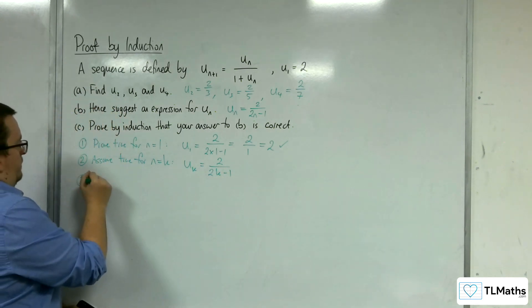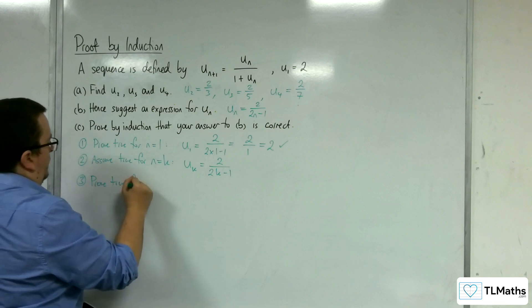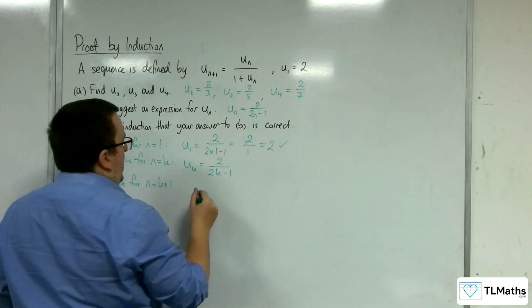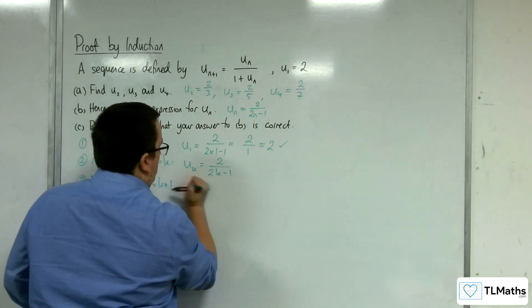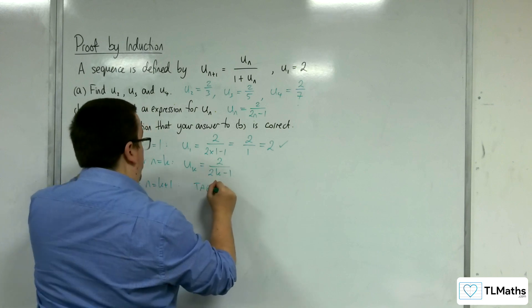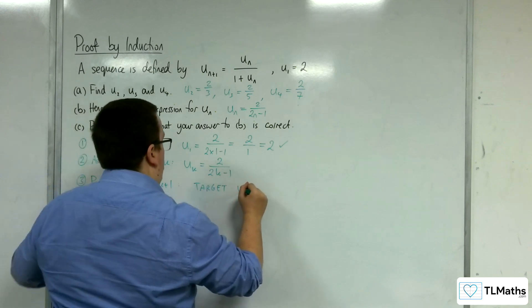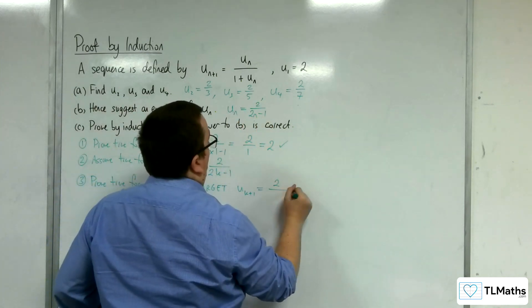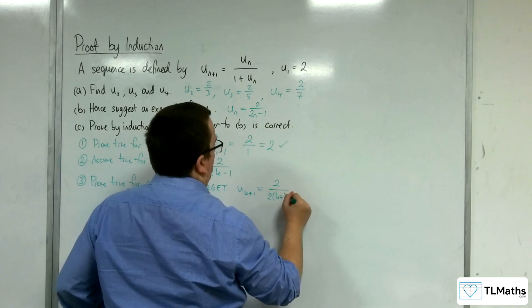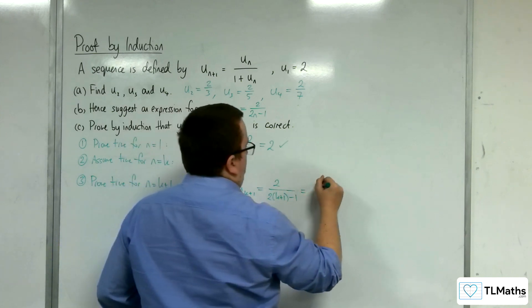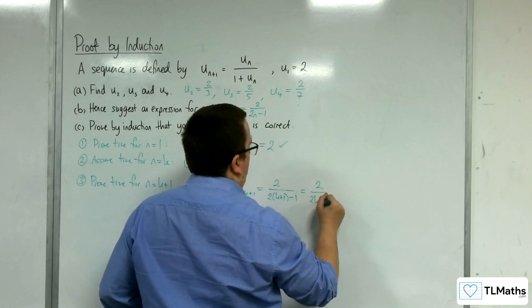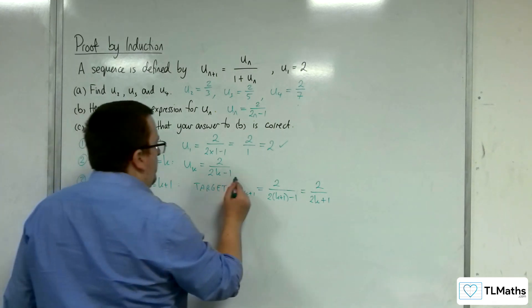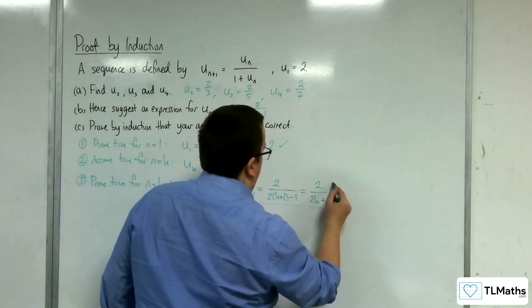Stage 3: proved true for n equals k plus 1. So when n is equal to k plus 1, we want this target. Our target for this is that u(k+1) is going to be equal to 2 over 2 lots of k plus 1 take away 1, which is the same as 2 over 2k plus 2 take away 1, so plus 1. If I can arrive at that, then I know I'm done.